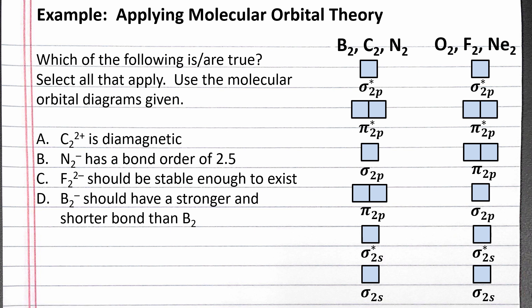In this example problem, we apply molecular orbital theory to various diatomic species which have elements in the second row of the periodic table. The problem reads: which of the following is or are true? Select all that apply. Use the molecular orbital diagrams given. (a) C₂²⁺ is diamagnetic, (b) N₂⁻ has a bond order of 2.5, (c) F₂²⁻ should be stable enough to exist, and (d) B₂⁻ should have a stronger and shorter bond than B₂.